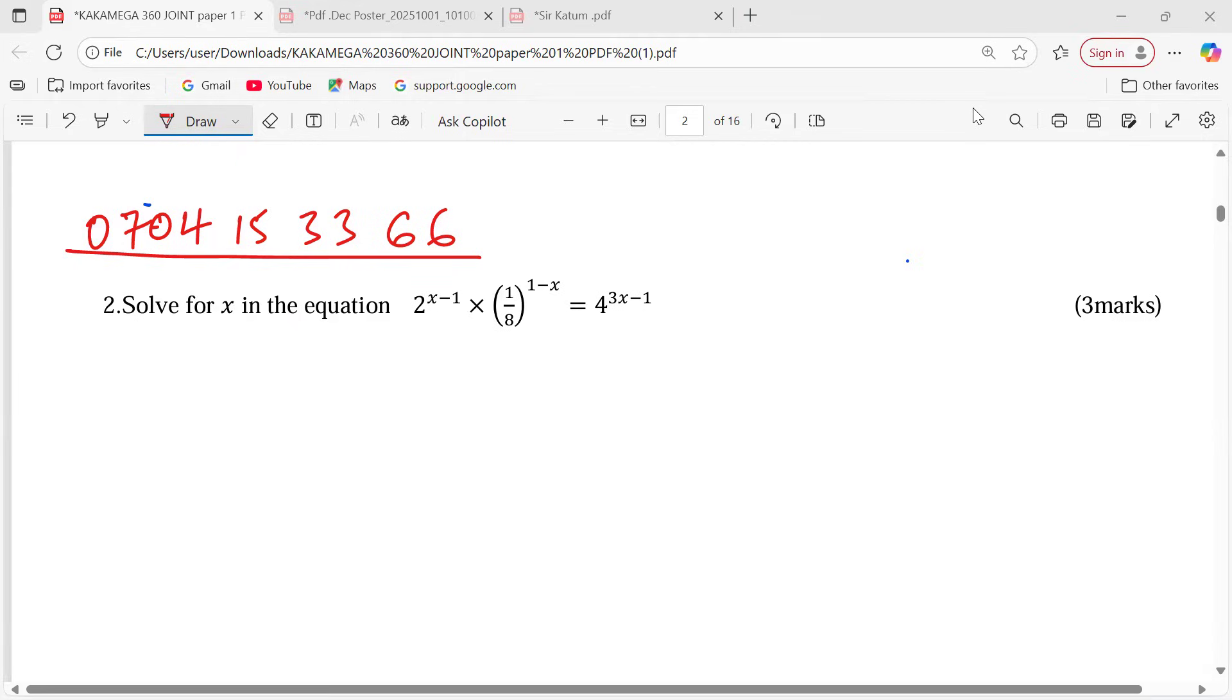Solve for x in the equation: 2 power x minus 1 multiplied by 1 over 8 raised to power 1 minus x equals to 4 raised to power 3x minus 1.